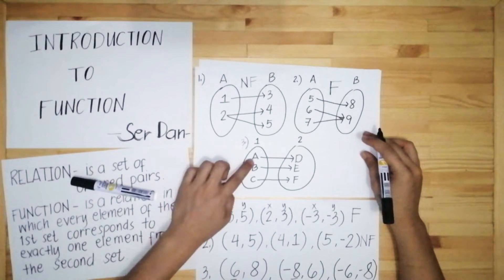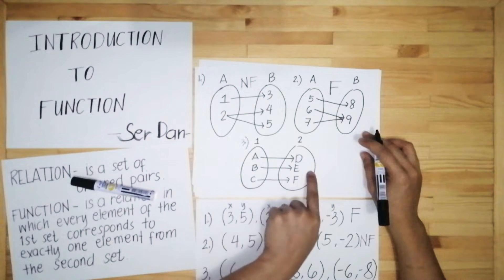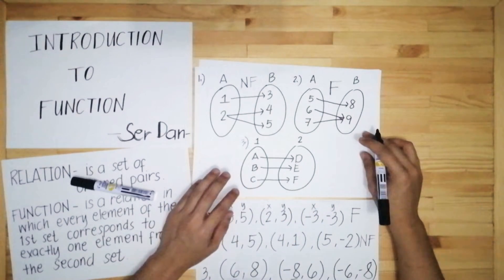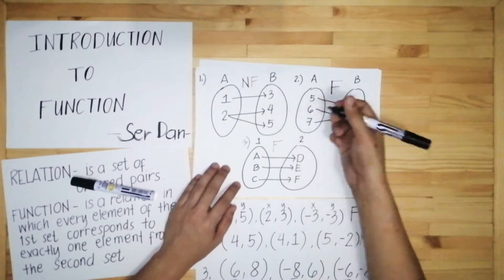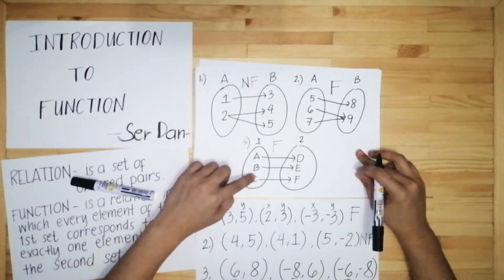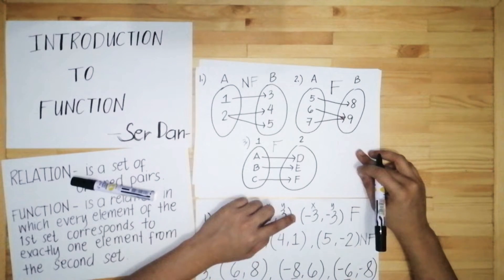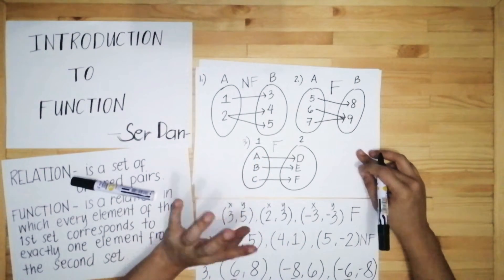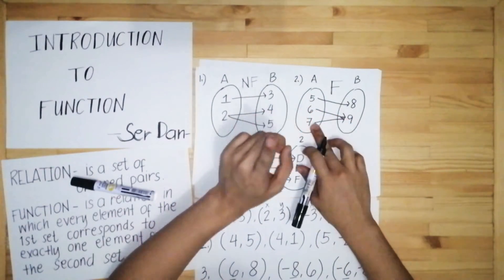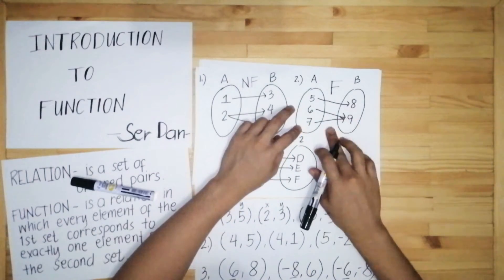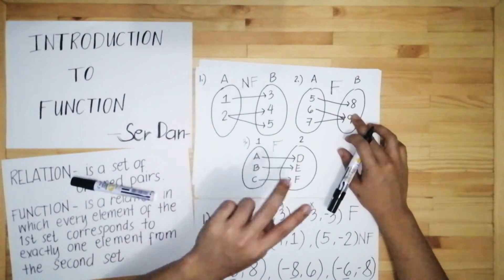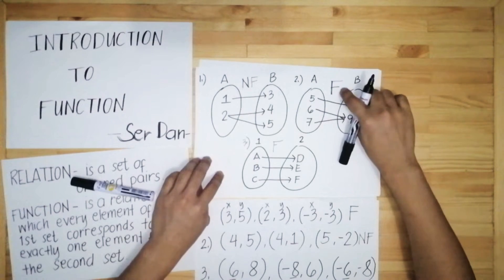In number three, element A corresponds to D, element B corresponds to E, and element C corresponds to F — a one-to-one correspondence. This is a function because every element in the first set has exactly one correspondence. What matters is that no element in the first set has more than one correspondence. Unlike in number one where element 2 had two correspondences, making it not a function.